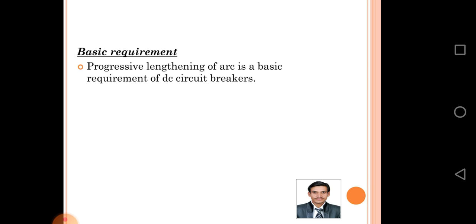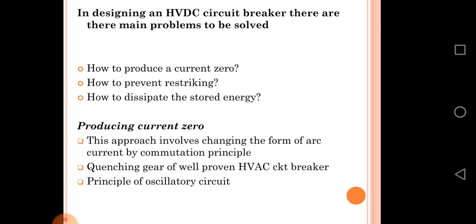In designing an HVDC circuit breaker, there are main problems to be solved: number one, how to produce a current zero; how to prevent restriking; how to dissipate the stored energy. Producing current zero — this approach involves changing the form of arc current by the commutation principle.